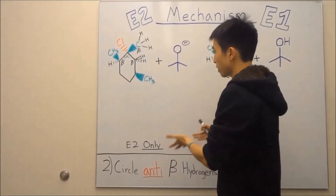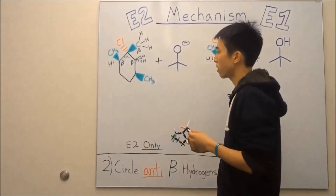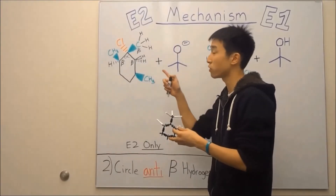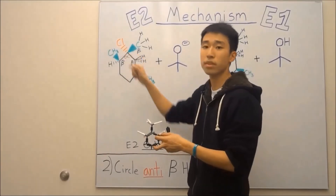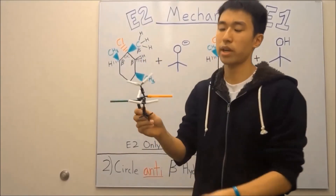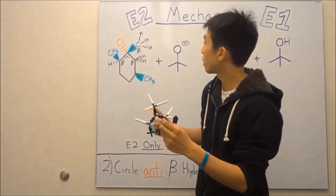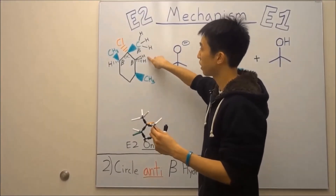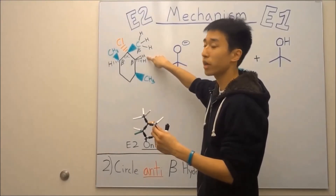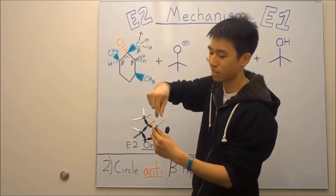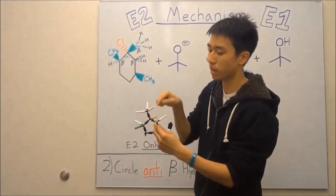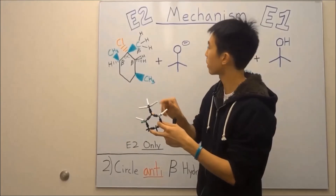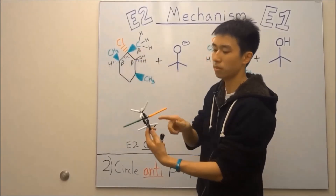What I mean by anti-beta hydrogens is hydrogens that are on the beta carbon and opposite of your leaving group chlorine. Chlorine is dashed over here, meaning it's going into the board — like this model right here, you can see chlorine going away from you. So anti would be a hydrogen that's wedged, coming out at your face. So these guys are anti — see how they're facing opposite ways? A syn hydrogen would be the one that's dashed, same direction as your chlorine, facing the same side.